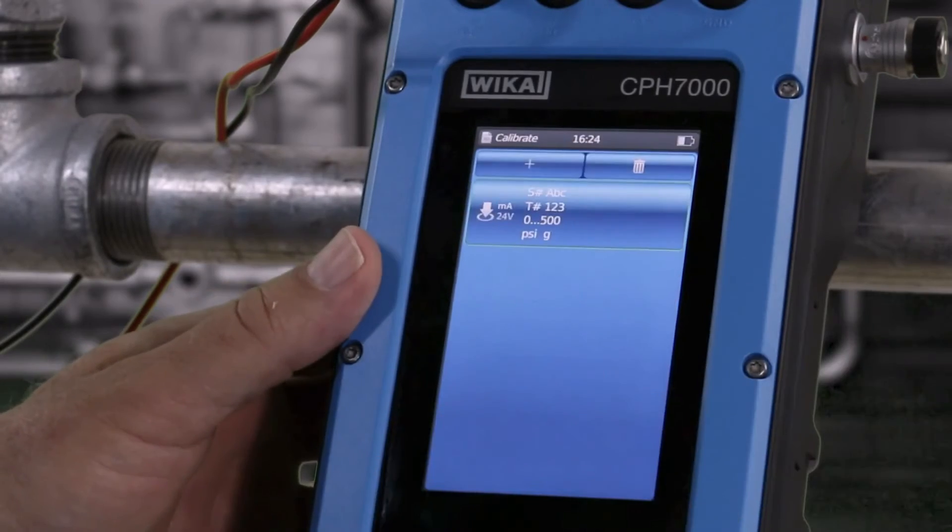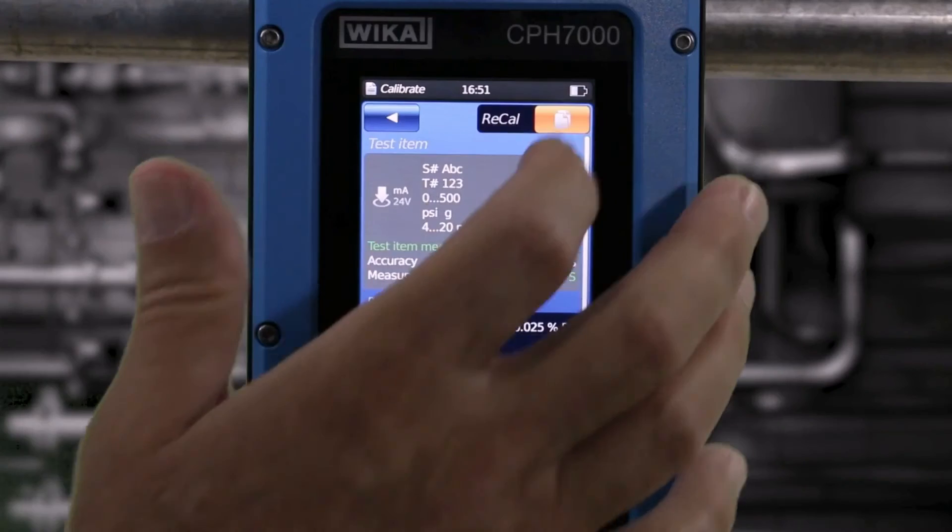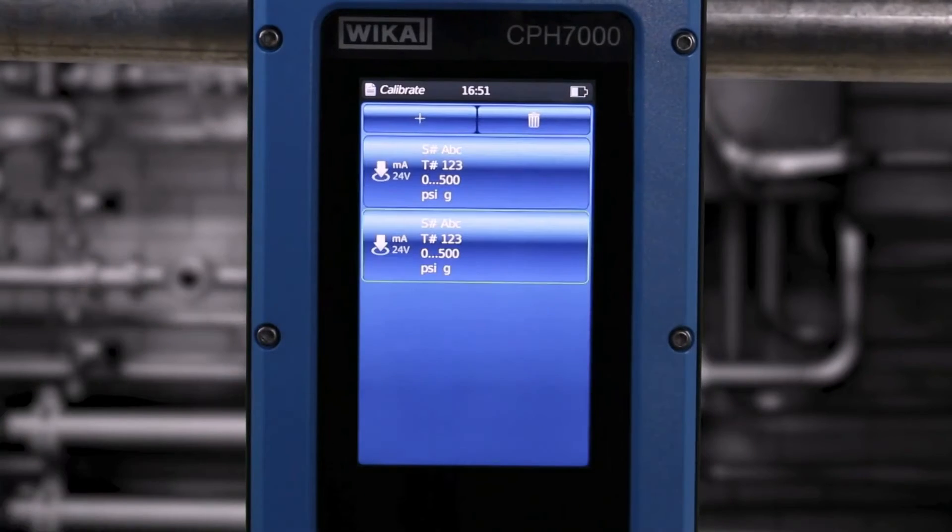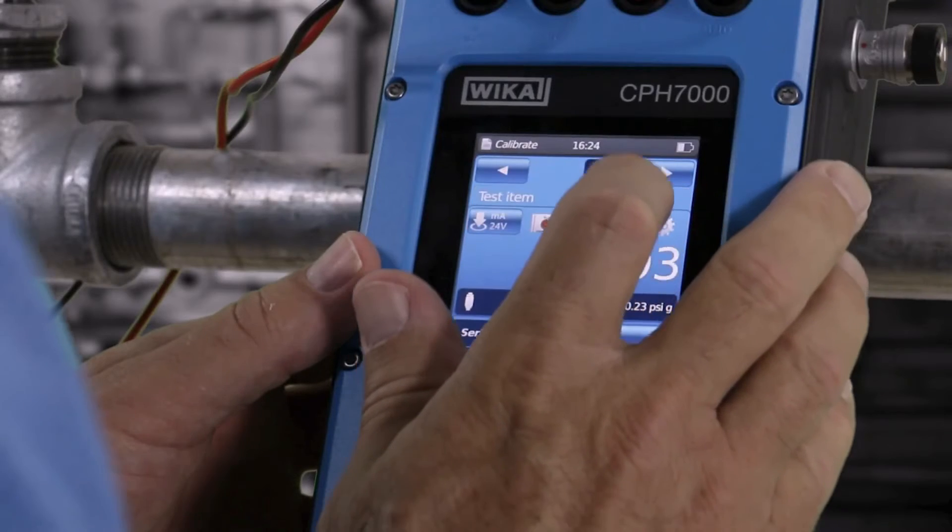Select Cal. Then choose the calibration sequence previously set and press the read cal button. Select the copied sequence. Double check the parameters previously set for the device under test and the reference standard.